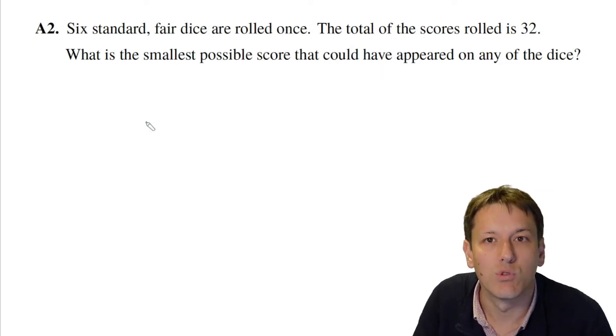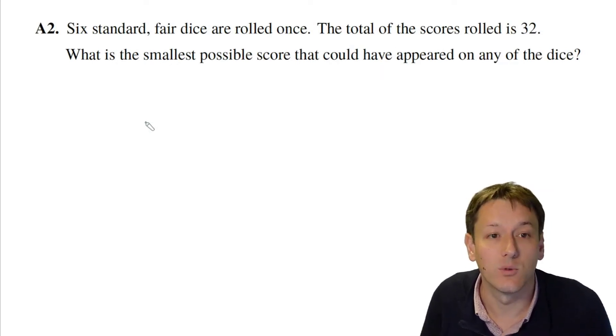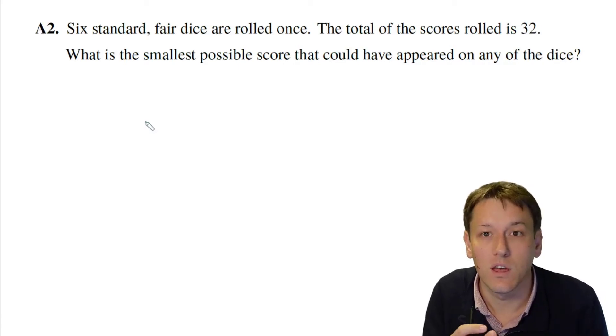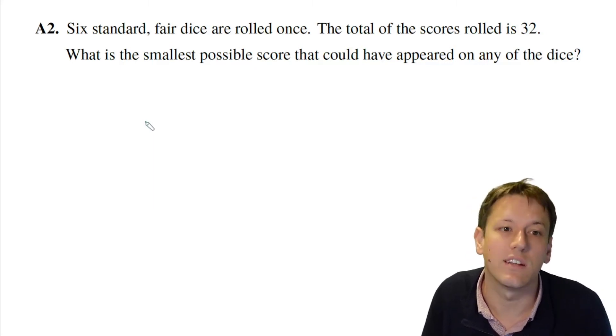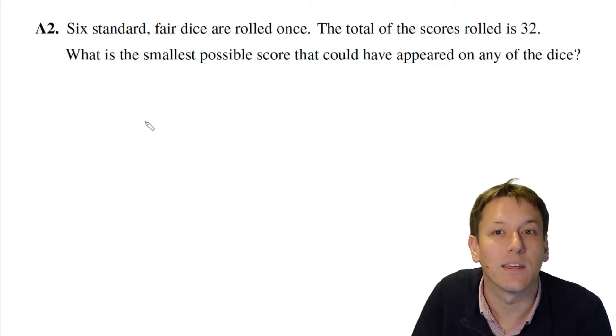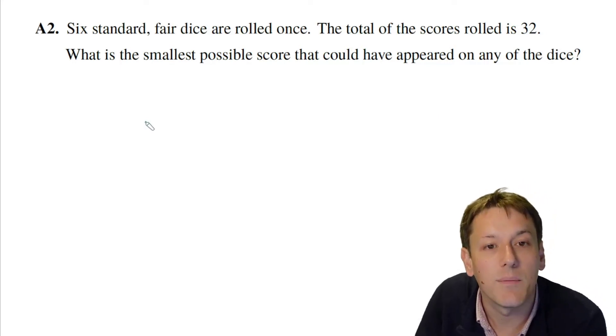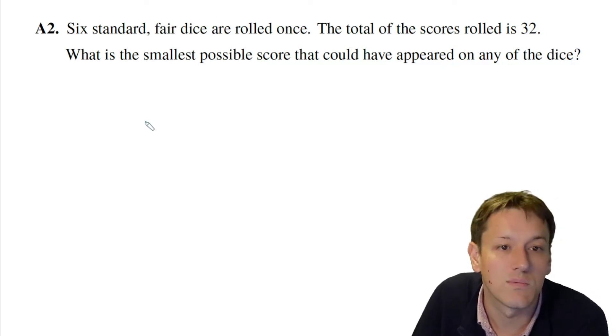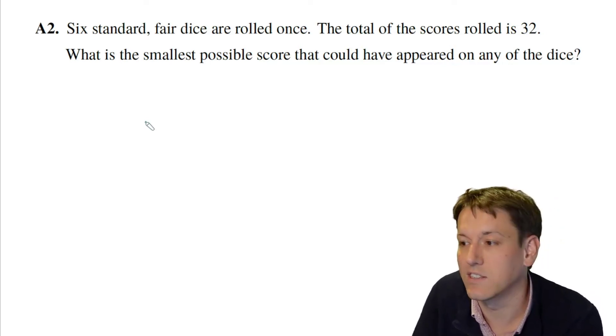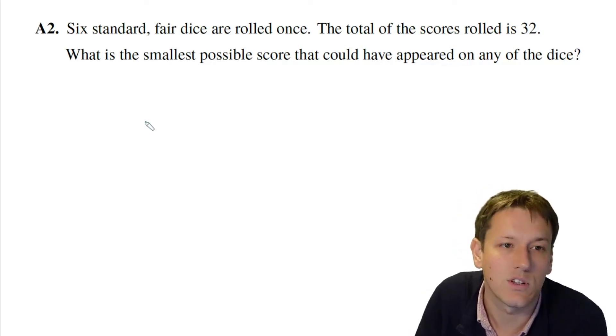Six standard fair dice are rolled once. A standard fair die just means an ordinary die with the numbers 1, 2, 3, 4, 5, and 6 on it. Fair means that it's not biased, so it has an equal chance of landing on each side, but it doesn't actually matter here about the fairness as we'll see. The total of the scores rolled is 32. What's the smallest possible score that could have appeared on any of the dice? So there's no probability in this question, so it doesn't matter whether the dice are fair or not.